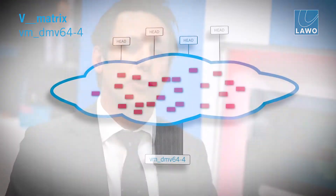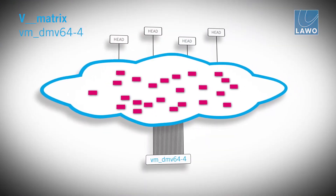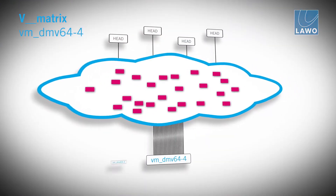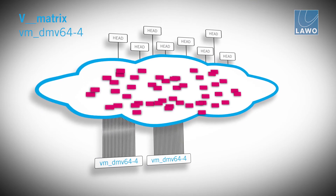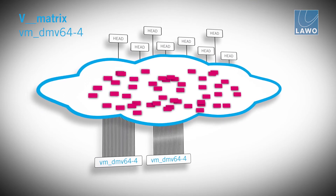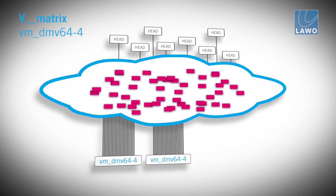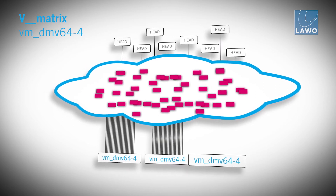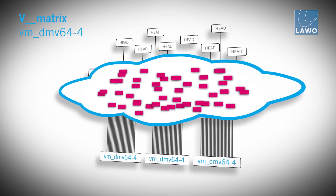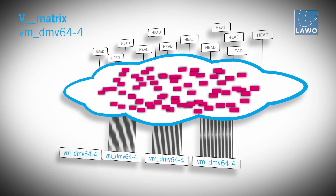The VM DMV 64.4 is based on a distributed architecture, using the IP network to glue all modules together. That means you can have some multiviewer capacity in your facility or off-site on a different campus. Or if you do a remote production, you can have some multiviewer at the remote end and some at the local end.